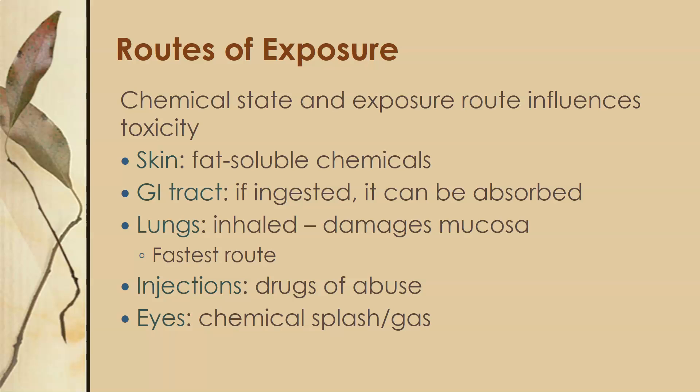The chemical state and exposure route influence toxicity. The skin is more susceptible to fat-soluble chemicals because it acts as a lipid barrier. If inhaled, the chemical causes damage to the mucosa lining the lungs, and inhalation is the fastest route into the bloodstream — as soon as the chemical enters the air of the lungs, it can cross into the capillaries. Injection is a common route for drug abuse. Eyes are also a route, usually via chemical splash or gas exposure.